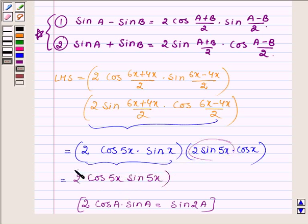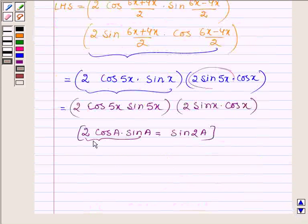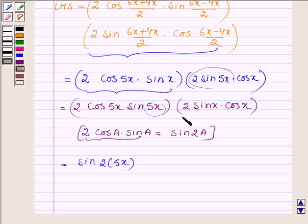That is, we are rearranging these terms such that we get it in the form of 2cosA·sinA, and here 2sinx·cosx. Now applying this formula.